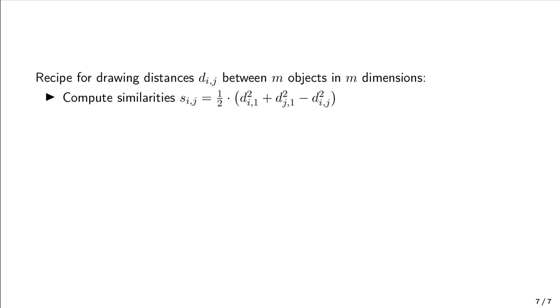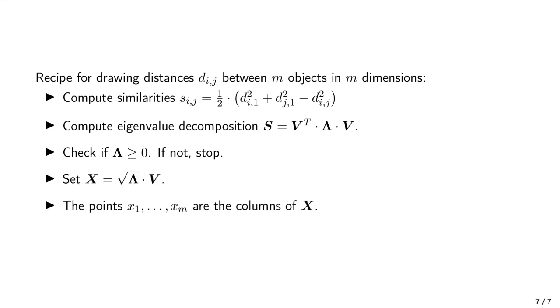We have a general recipe for drawing distances dij between m objects. We first compute similarities sij via this formula here. Then, we compute the eigenvalue decomposition of our similarity matrix. Next, we check if any entry of lambda is negative. If it is, we stop, because drawing is impossible. Otherwise, we set our points to the columns of X, which is the square root of lambda times V. And that's it. That's how you draw distances.